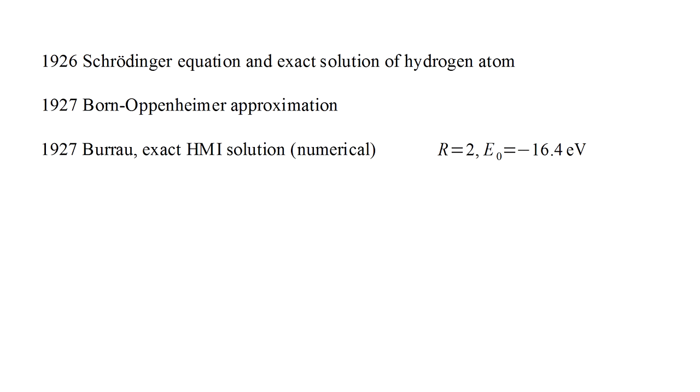In that same year, Burrau presented the exact solution of the Schrödinger equation for the hydrogen molecule ion. In agreement with the experiment, he found the protons to be separated by two Bohr radii with a total energy of minus 16.4 electron volts. The details involved some fairly sophisticated mathematics and some of the steps had to be done numerically.